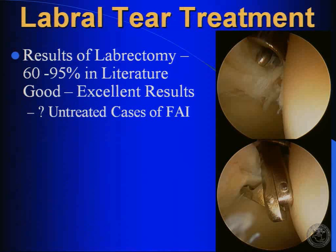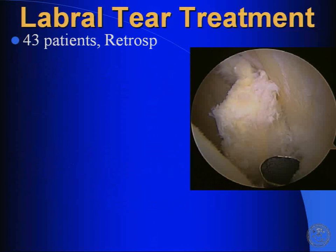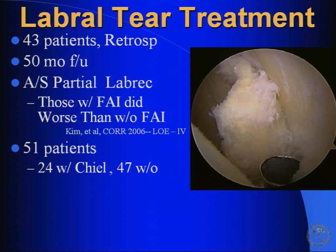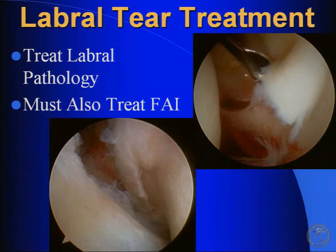Classically we talk about the labral lesion — about 60 to 95 percent good to excellent results with labrectomies — but most of this data occurred before we actually understood about impingement. Tanzer showed that only a quarter of his patients who had arthroscopic partial labrectomies did well, and 97 percent of these people had untreated FAI. Kim from Korea reviewed 43 patients retrospectively at just over four years — those with anatomy of impingement that was not treated did worse than those without. And Ricky Villar had 51 patients — 24 with labrectomy plus chielectomy, and 47 without chielectomy — finding at one year that the likelihood of a good to excellent result was much better in those that had the arthroscopic femoral osteoplasty or chielectomy.